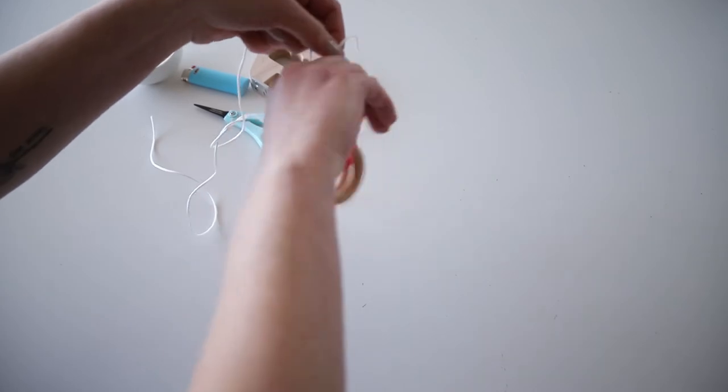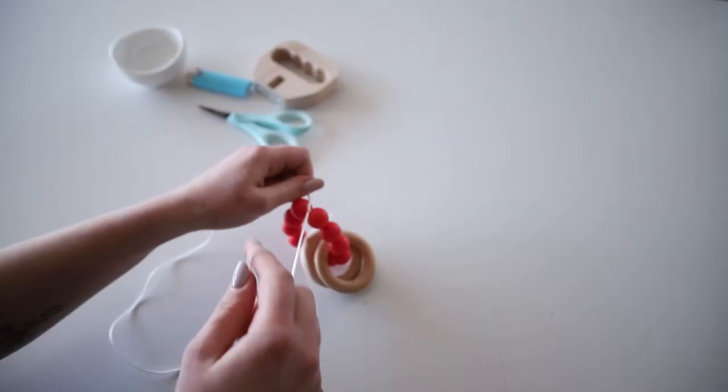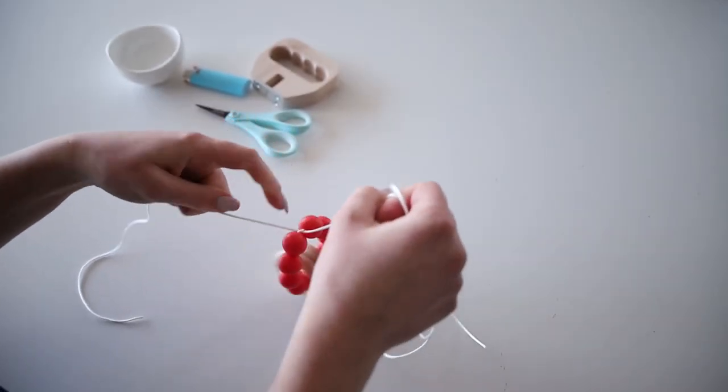Now that everything is on in the order that you would like you will need to knot the cord tightly between two beads. Ensure that when you begin knotting you have kept the beads on the cord as tightly together as possible.